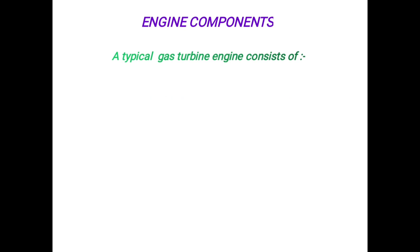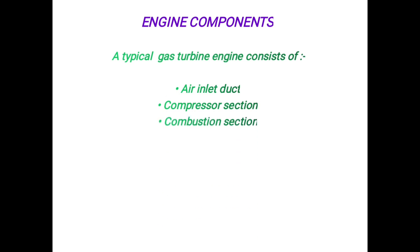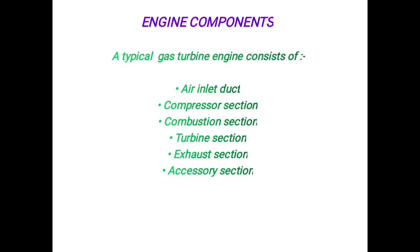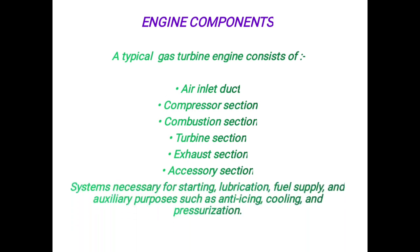A typical gas turbine engine consists of air inlet duct, compressor section, combustion section, turbine section, exhaust section, accessory section, and systems necessary for starting, lubrication, fuel supply, and auxiliary purposes such as anti-icing, cooling, and pressurization.